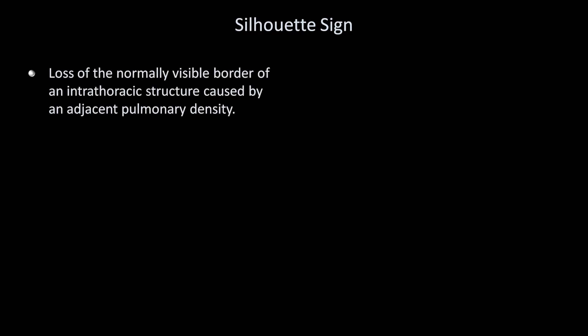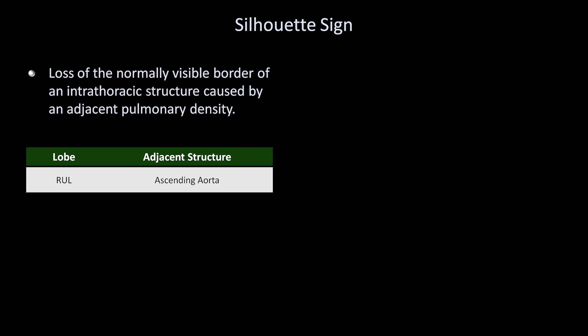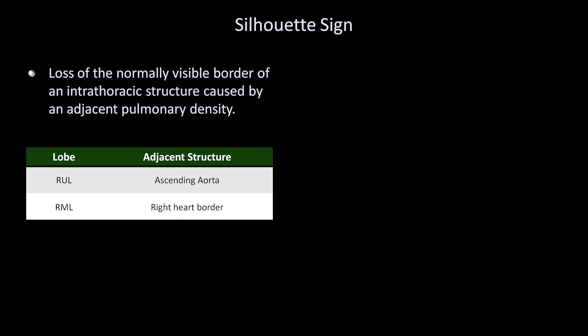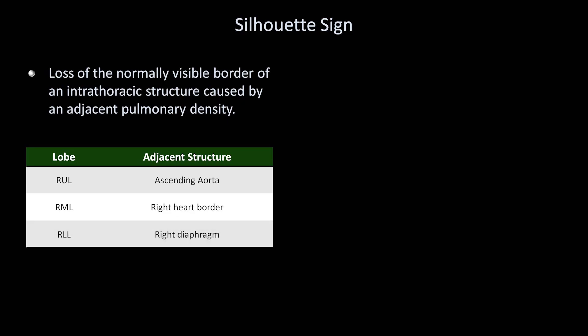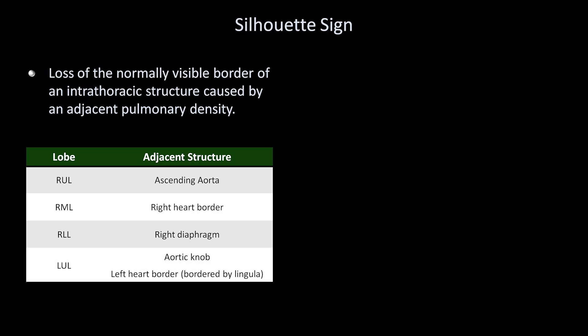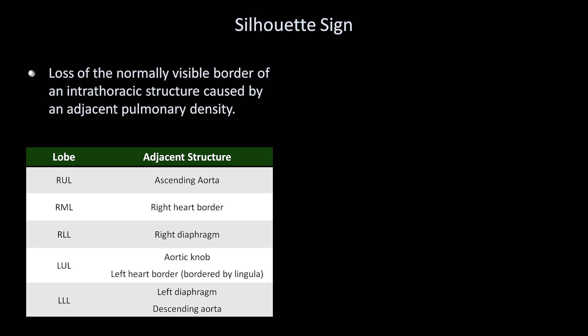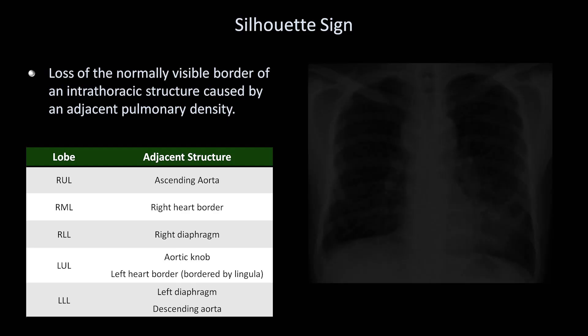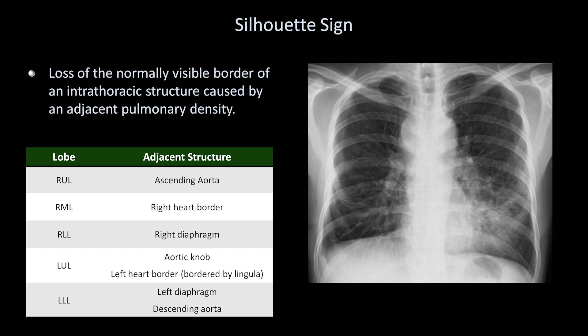When identifying and localizing an opacity, there are two helpful radiographic signs. The first is the silhouette sign, in which there is loss of the normally visible border of an intrathoracic structure caused by an adjacent pulmonary density. A density in the right upper lobe can obscure the ascending aorta; a right middle lobe opacity obscures the right heart border; the right lower lobe obscures the right diaphragm; the left upper lobe can obscure the aortic knob and/or the left heart border — specifically bordered by the lingula; and a left lower lobe opacity can obscure the left diaphragm and/or the descending aorta. In this example, it's the left heart border that's obscured, so the opacity is located in the lingula.